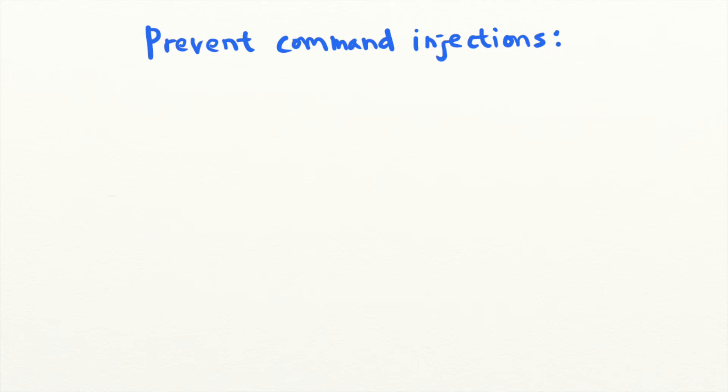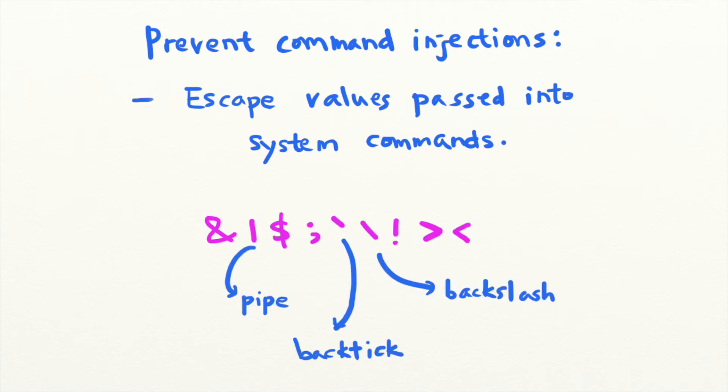Finally, you can also escape values inserted into OS commands instead. For example, some dangerous characters that should be escaped include these. But this is usually less effective because attackers are constantly coming up with inventive methods to bypass blacklist-based input validation.